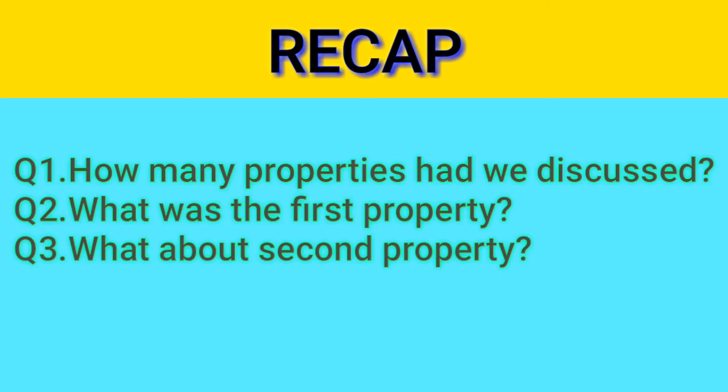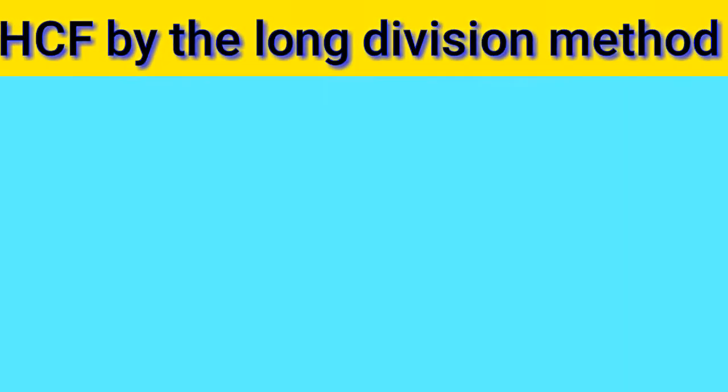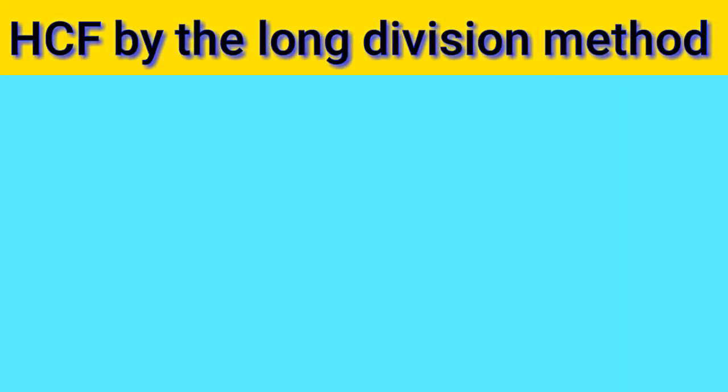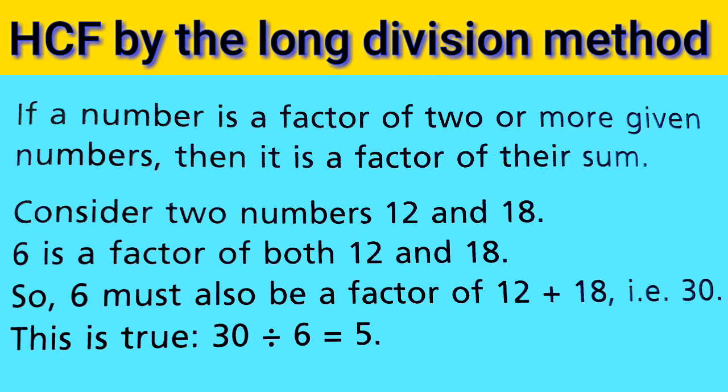Now we are moving towards today's topic: HCF by the long division method. Property number three: if a number is a factor of two or more given numbers, then it is a factor of their sum. Consider two numbers, 12 and 18. Six is a factor of both 12 and 18, so 6 must also be a factor of 12 plus 18, which is 30. This is true — 30 divided by 6 equals 5.